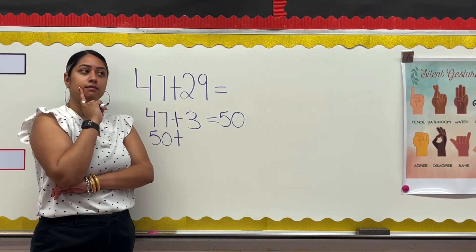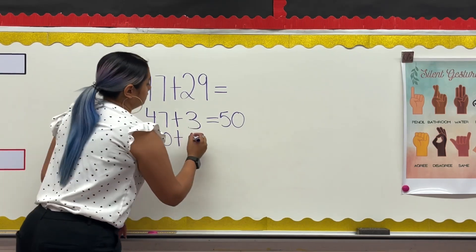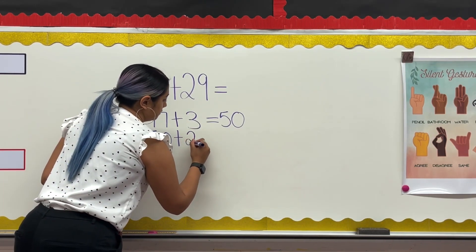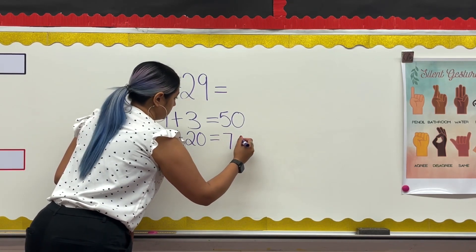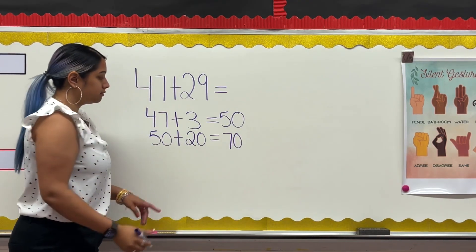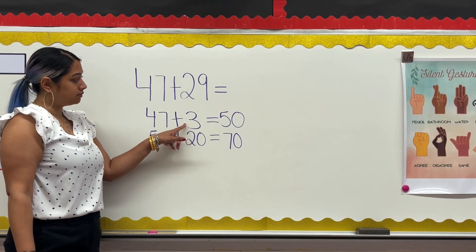I'm going to add 2 tens or 20. I know 5 tens and 2 tens make 7 tens or 70. So far, I have added 23, 3 and then 20.